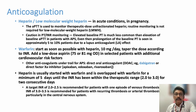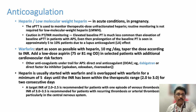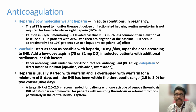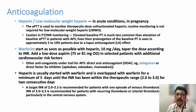Along with heparin, most patients with APLA syndrome require lifelong anticoagulation. If the patient is not pregnant, you can start warfarin. If the patient is pregnant, warfarin should be avoided; continue with heparin or low molecular weight heparin. Low molecular weight heparin should not be used in patients with renal failure — in those patients, conventional regular heparin is better. Warfarin should be started along with heparin because warfarin takes a minimum of 7 days to reach peak action. After warfarin is started, PT and INR should be monitored.